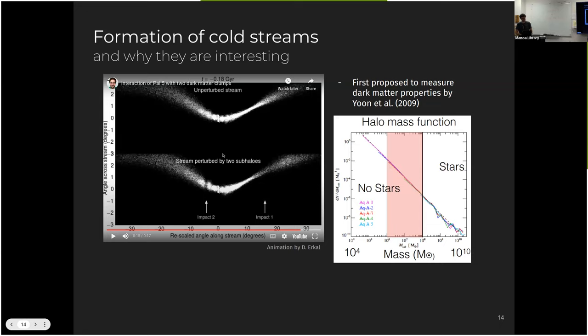So this is potentially, right, if we can measure the properties of these gaps in streams, we could infer the properties of these objects that perturbed them. And these objects could be one of these very low mass dark matter-only subhalos that are unique to cold dark matter. So that's one way of ruling out warm dark matter in respect to cold dark matter.